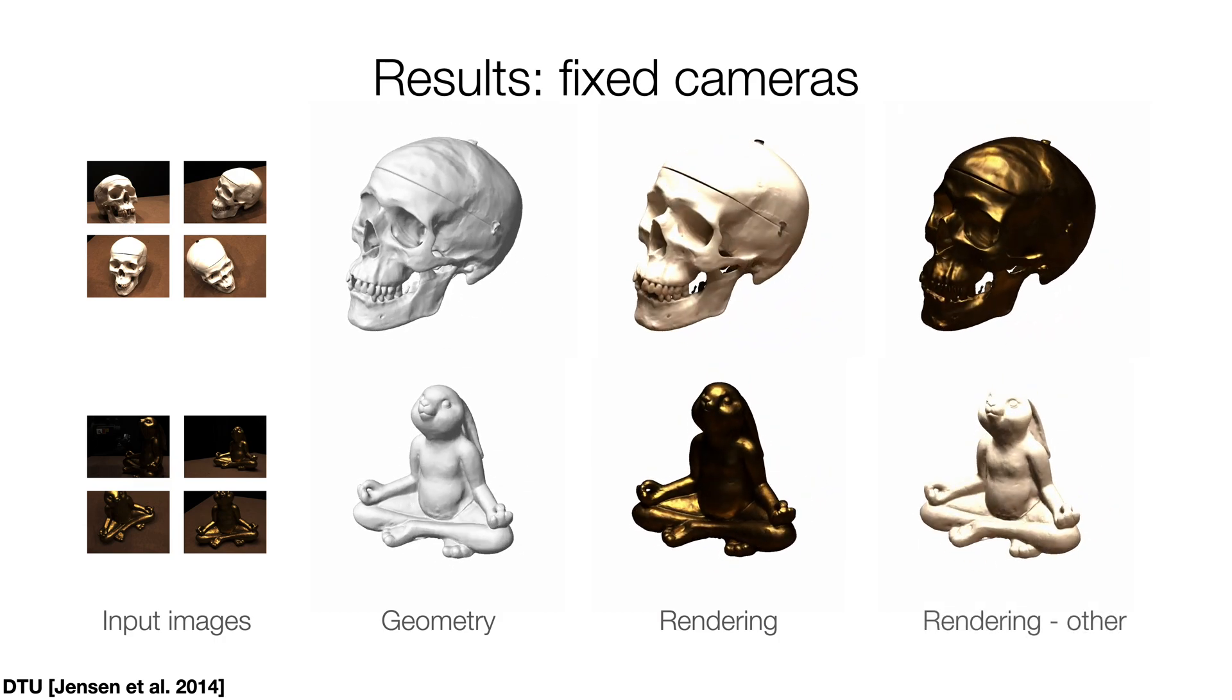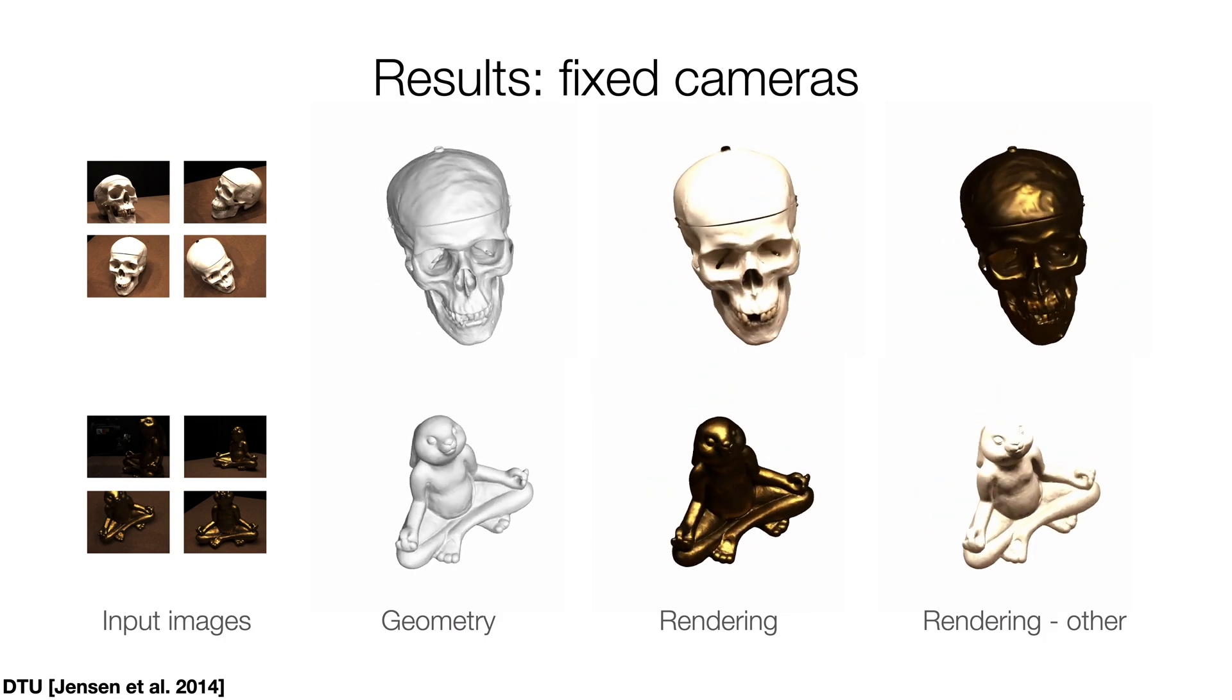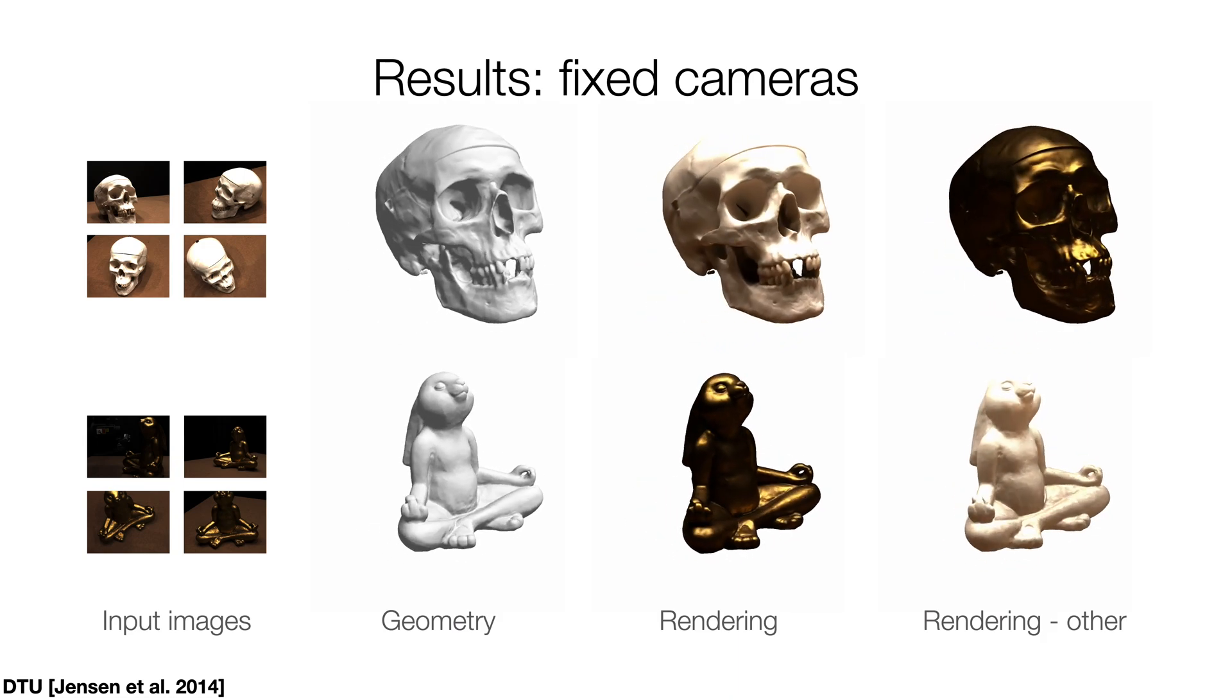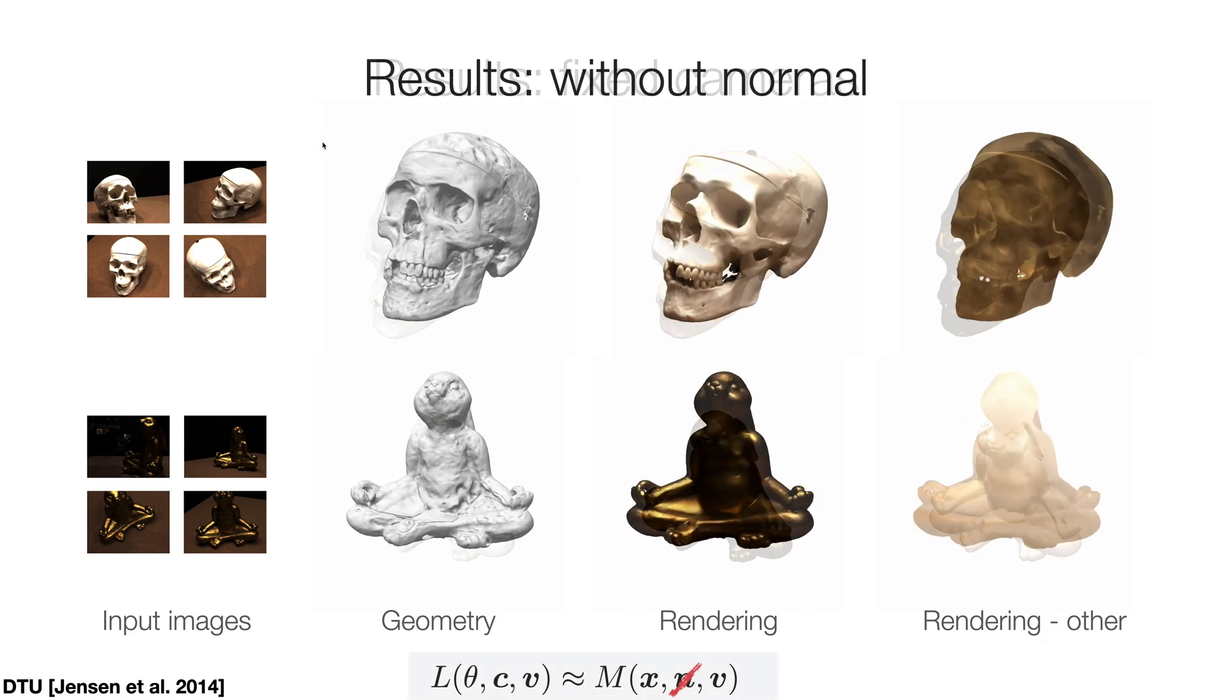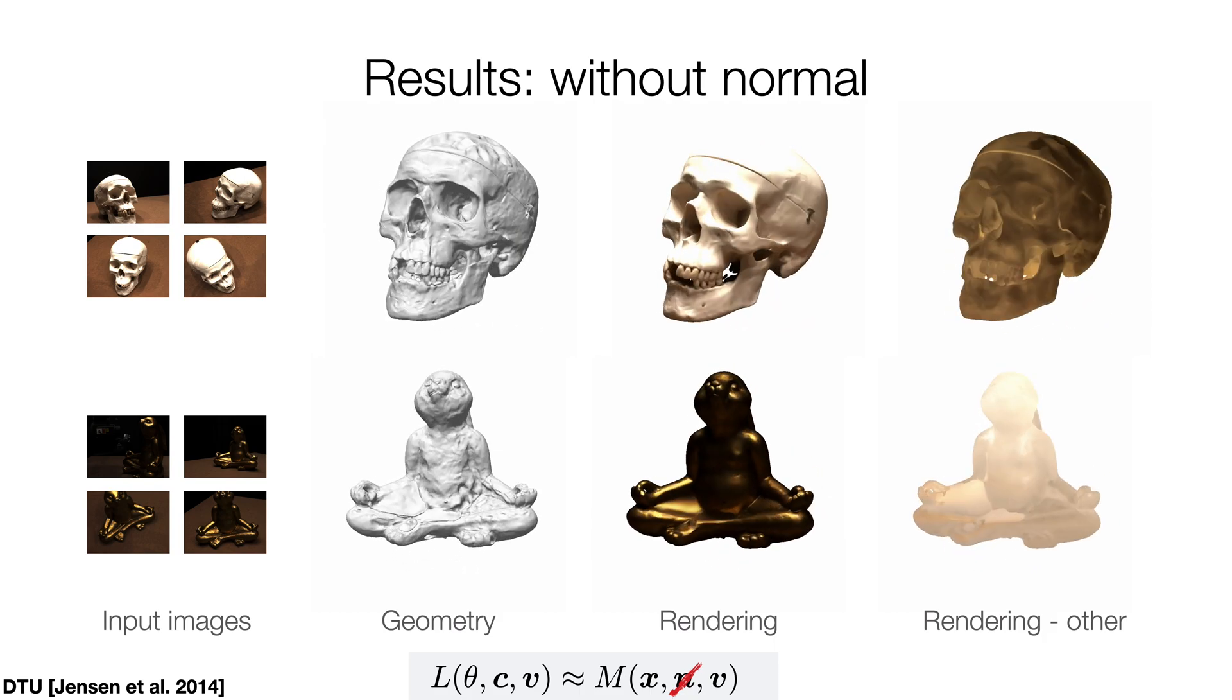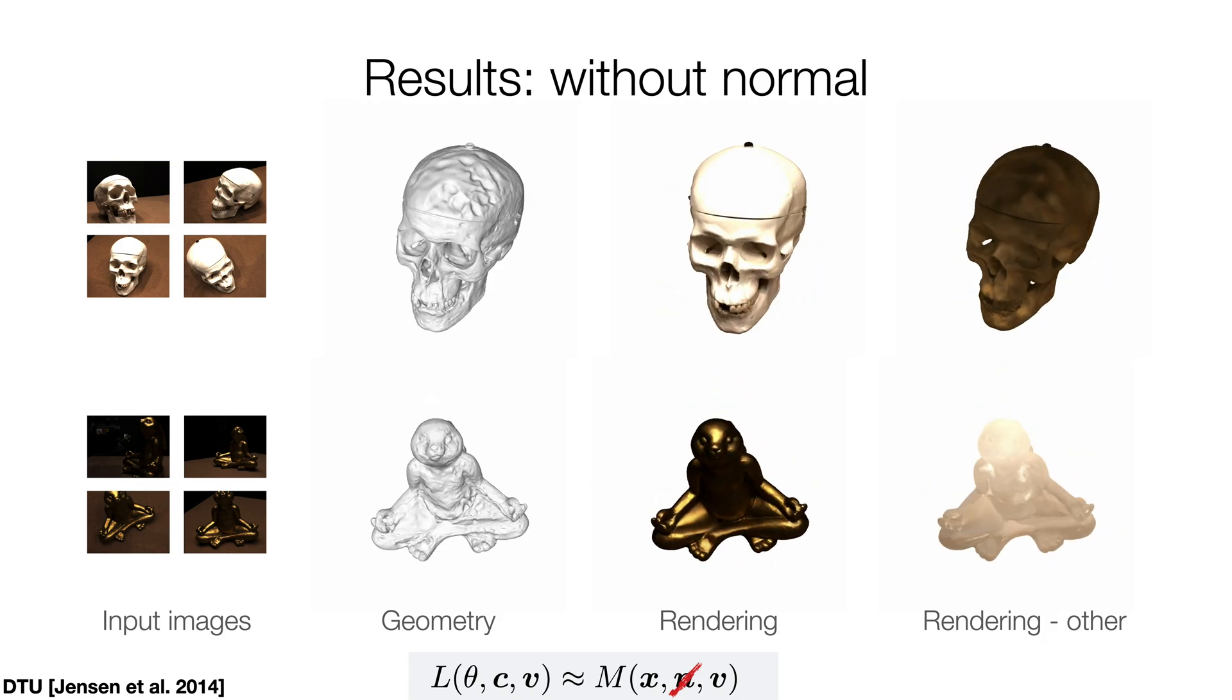Towards the goal of disentangling geometry and appearance, we show that we are able to transfer the appearance learned from one scene to different geometry by simply switching between the rendering networks. Note that without using the normal in the renderer, the geometry is not well approximated, and the renderer fails to produce a plausible rendering of different geometries.